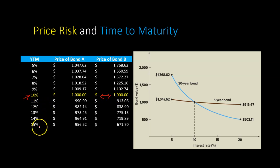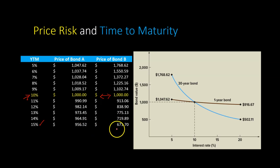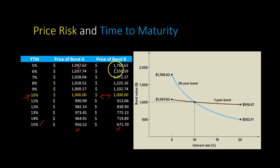Specifically, when the yield to maturity is exactly equal to the coupon rate, which is 10%, no surprises that both bonds have the exact same price, which is the face value of the bond — $1,000. Now, if the yields go up all the way to, say, 15%, both bonds experience a decline in price. But notice that the decline in the price of bond B is way more — $671 — compared to the price of bond A, which is $956. The same holds in the opposite direction: if the yield to maturity goes down, prices of both bonds will go up, but the price of bond A will go up by a lower magnitude compared to bond B. In other words, bond B is more sensitive to changes in yield to maturity.